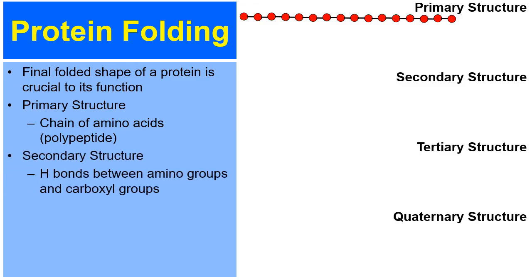The secondary structure. Hydrogen bonds between the amino groups and the carboxyl groups will cause the polypeptide to fold, like you see right here. This is called the secondary structure.